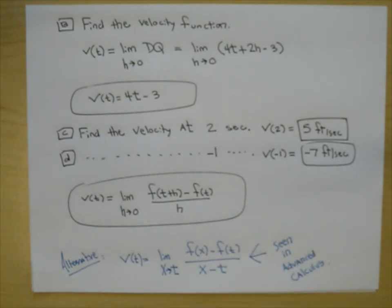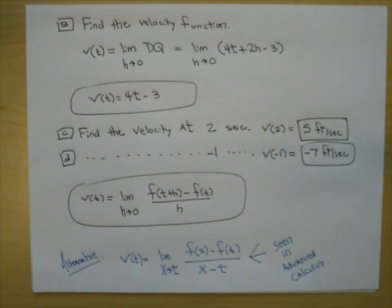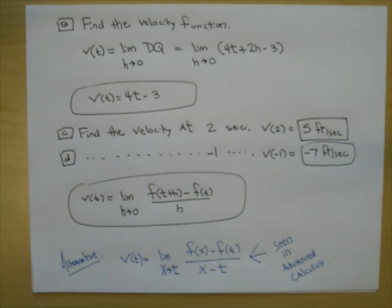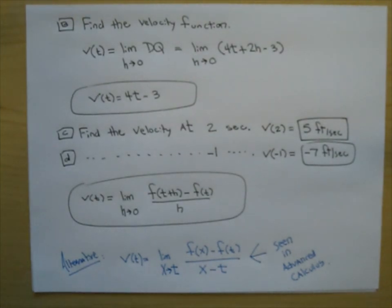Hopefully you won't have any problems with Bug 6. The worst part is something you've already done: computing the difference quotient. Hitting that with a limit as h goes to 0 is not a big problem. Asking for velocities at certain times after you have a velocity function is even less of a problem — you're just evaluating a function. Hopefully this Bug 6 brought difference quotients, bug, and limits all together to give us the derivative. See you in the next video — have a good day.